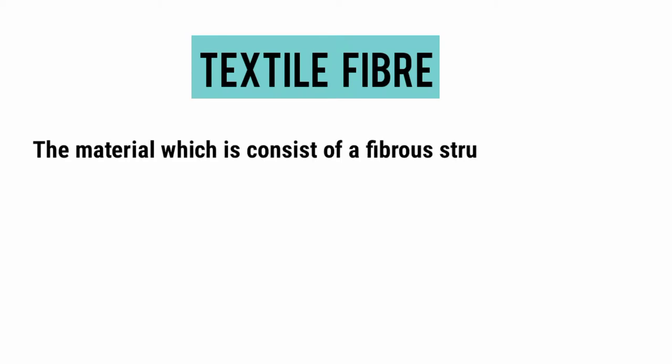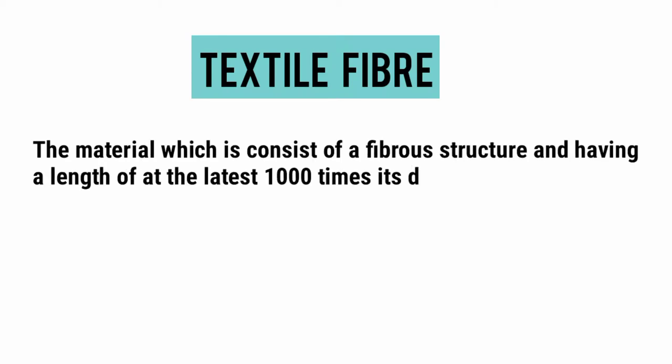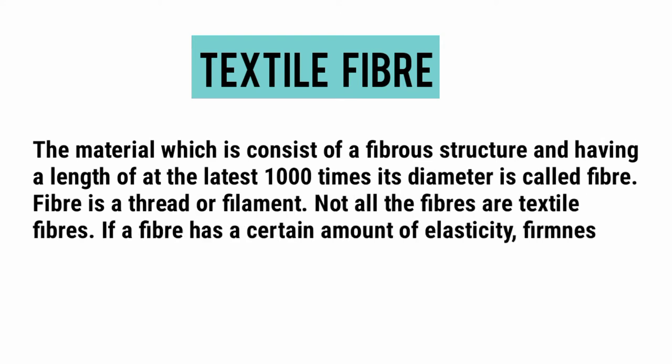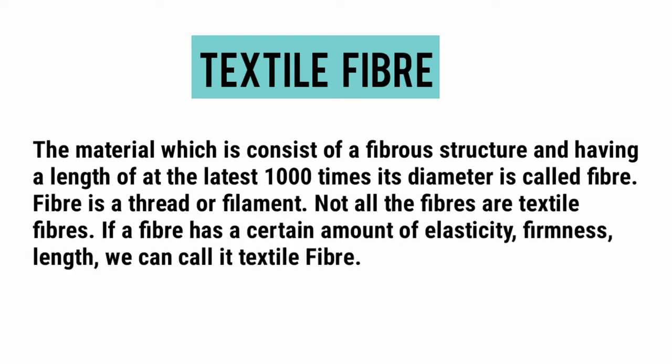The material which consists of a fibrous structure and having a length of at least 1000 times its diameter is called fiber. Fiber is a thread or filament. Not all fibers are textile fibers. If a fiber has a certain amount of elasticity, firmness, and length, we can call it a textile fiber.